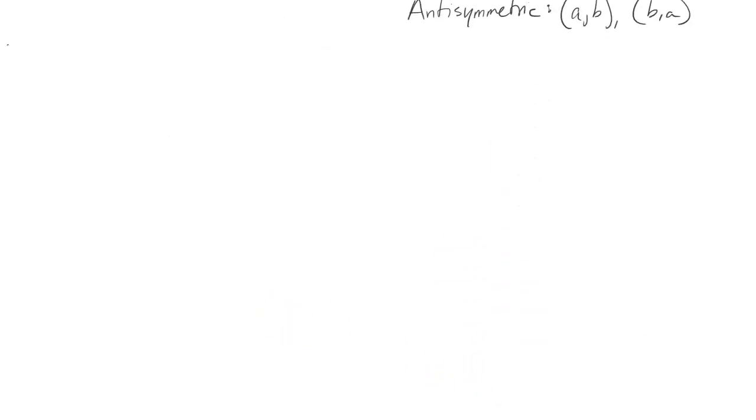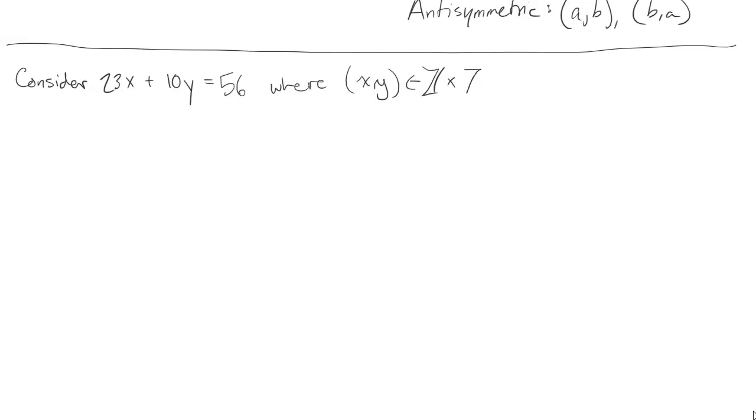Next let's do an example that's kind of borrowed from number theory. Consider the equation 23x + 10y = 56, where all of the pairs (x,y) have to come from the set Z × Z. So x and y both have to be integers. This equation is called a linear Diophantine equation because it maps a line in the space Z × Z.